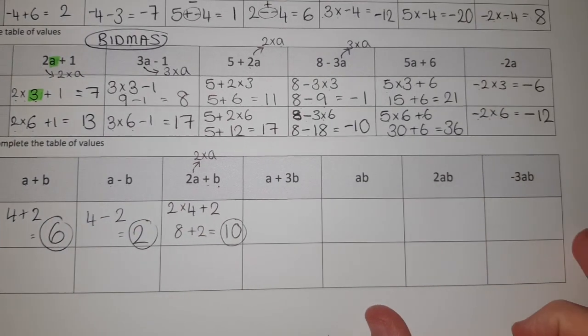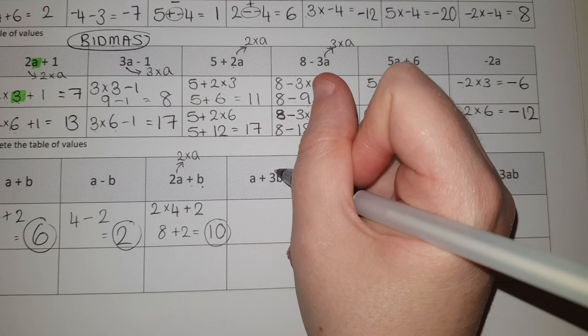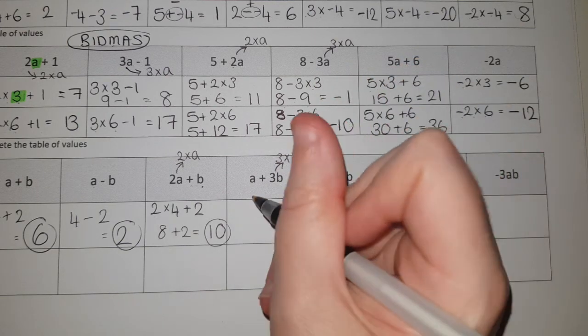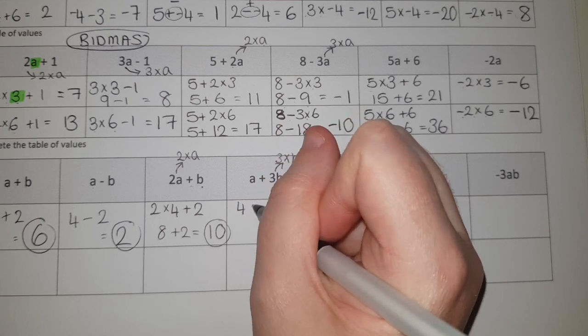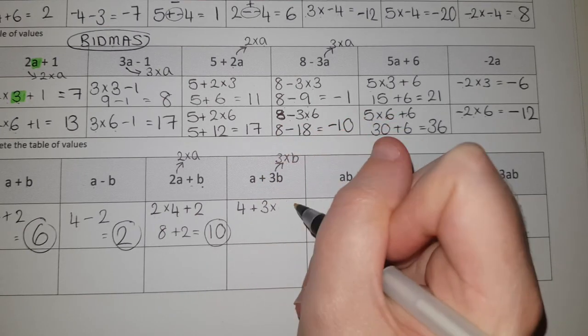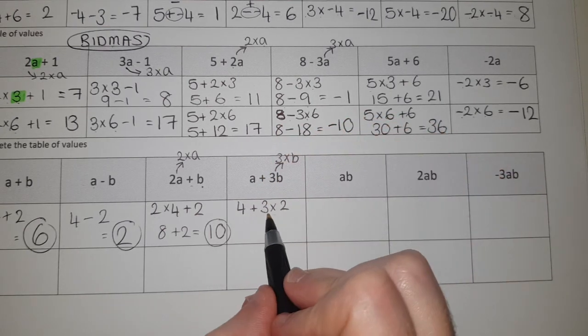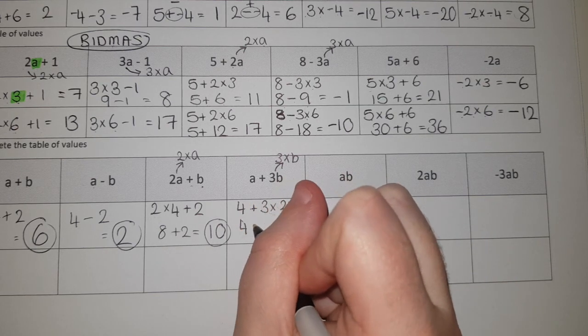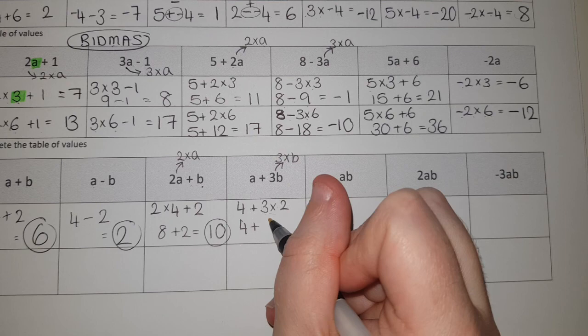Okay, if I look at the next question, I've got 3B. That means three multiplied by B. So I've actually got, if A is four, I'm adding on three times - and B is two. BIDMAS means that I do the multiplication before the addition. So I've got four add - stays where it is - three times two is six. Four add six is ten again.